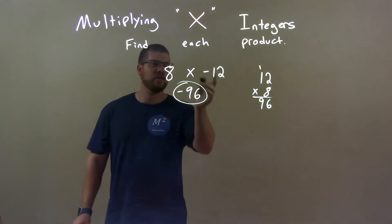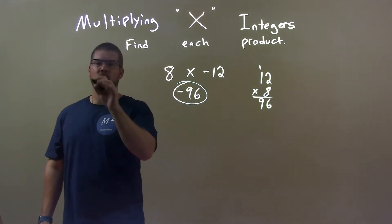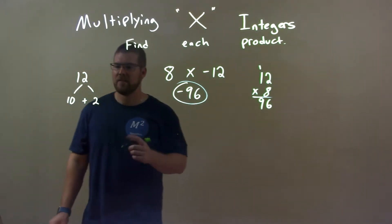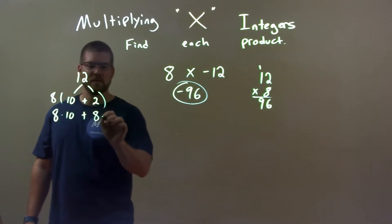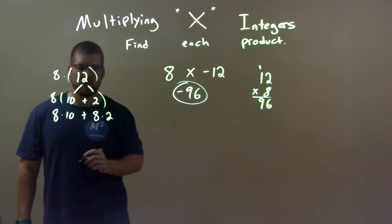So another way I like to do this problem here, just another way of thinking about it, 8 times 12. Well, 12 is 10 plus 2. And if I multiply 8 times each one of these, we have 8 on the outside, 8 times 10 distributed in, plus 8 times 2.